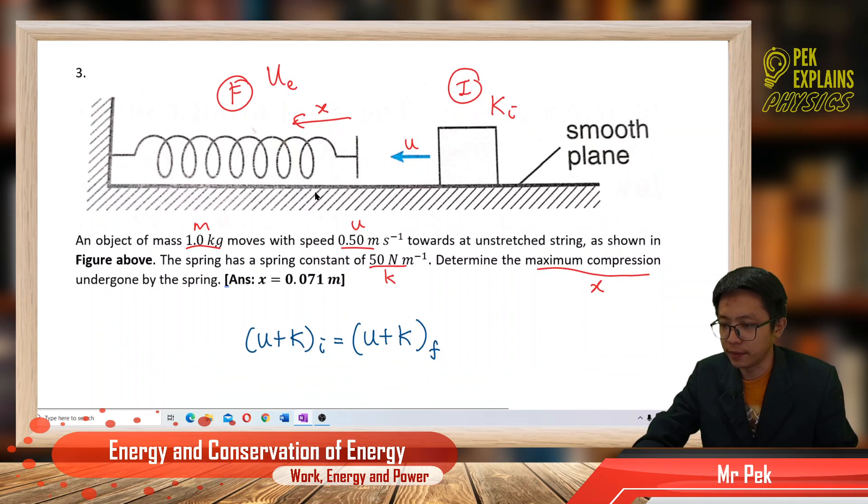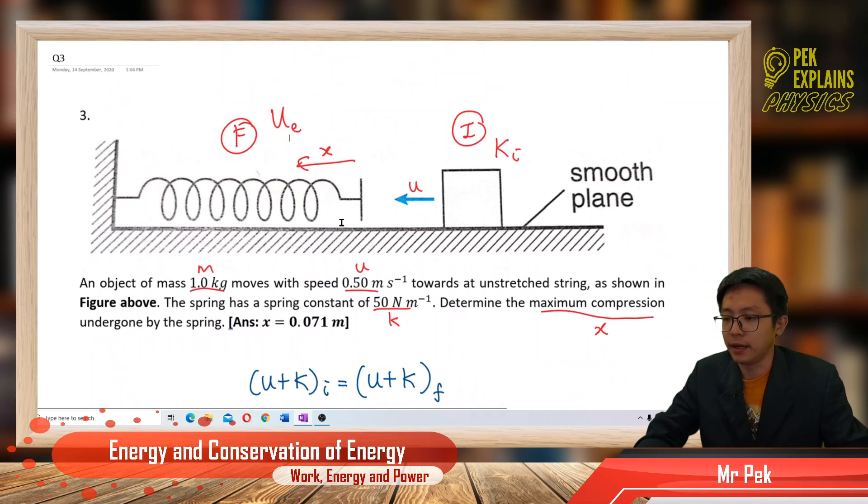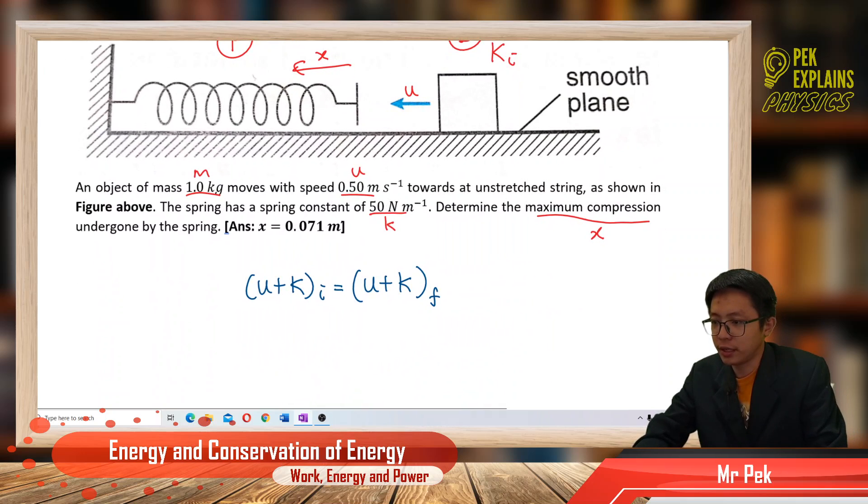The kinetic energy has converted to elastic potential energy. Initially, the block only has kinetic energy, no potential energy. Finally, there's no more kinetic energy—it has all become elastic potential energy.